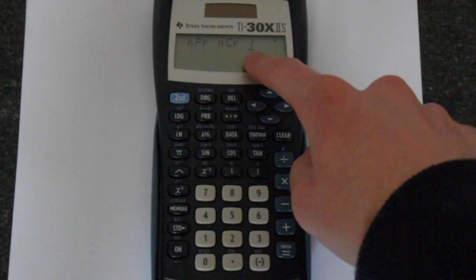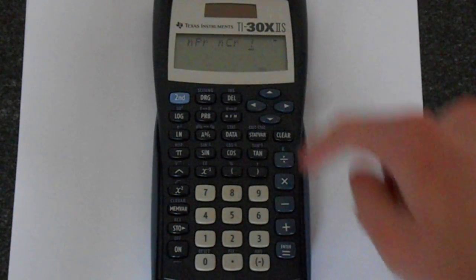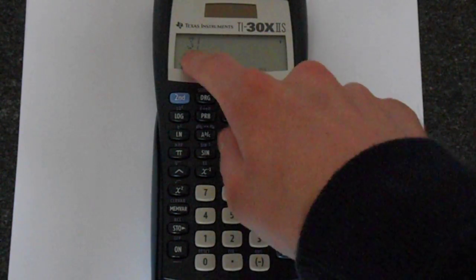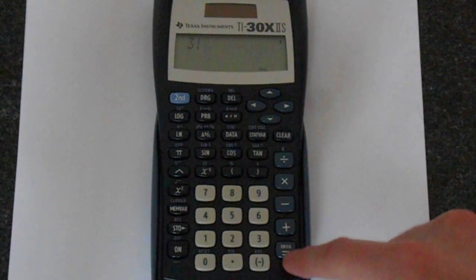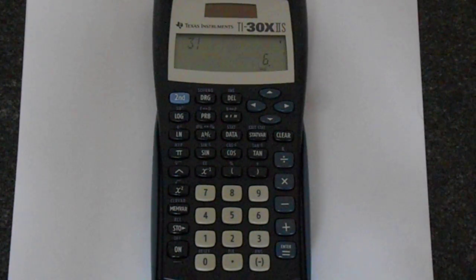But we want this exclamation mark. Underline that exclamation mark, press Enter. We've got 3 factorial. Press Enter or Equals and you get 6.